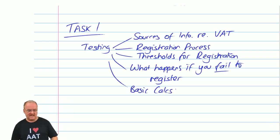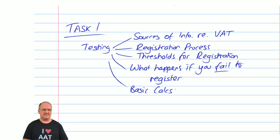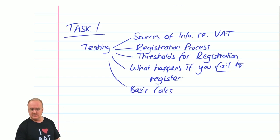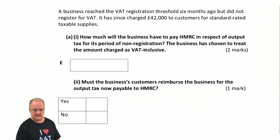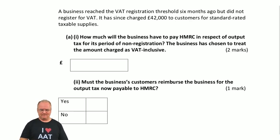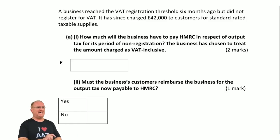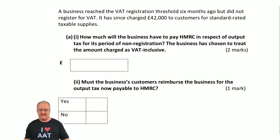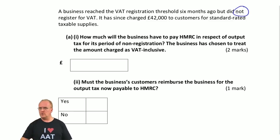We'll also see some basic calculations in here. So let's look at part one. A business reached the VAT registration threshold six months ago, which means they should have registered for VAT — but they did not register for VAT.